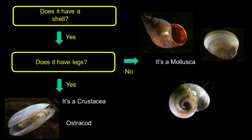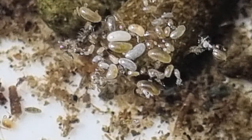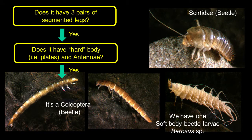If it has a shell and doesn't have any legs present, then you're dealing with some sort of snail, some sort of mollusc. There is a type of crustacea that actually does have legs inside the shell — these are ostracods, and they're very small, usually only a millimetre in size. Carrying on with our three pairs of legs: if it has a hard body, some plates and antennae, then it's probably a Coleoptera — a beetle — although there is one beetle that has a sort of fleshy body.